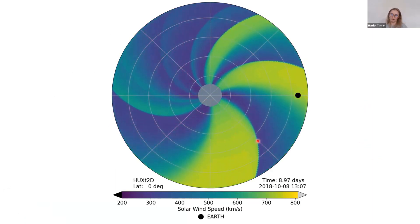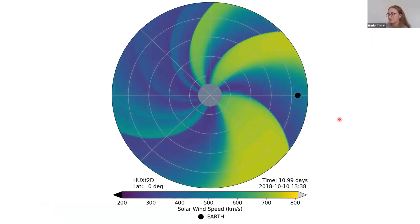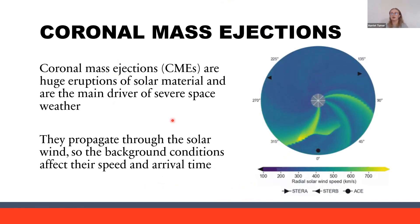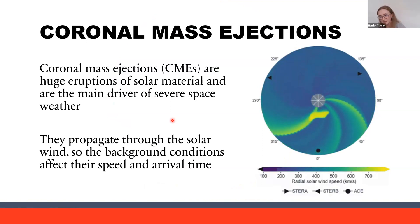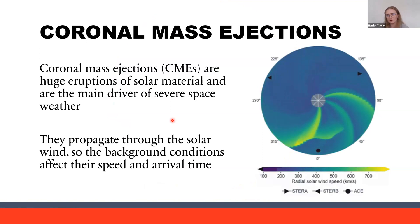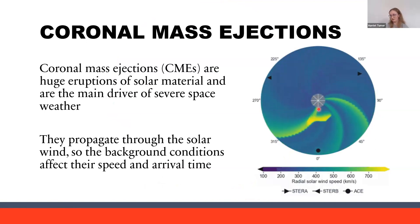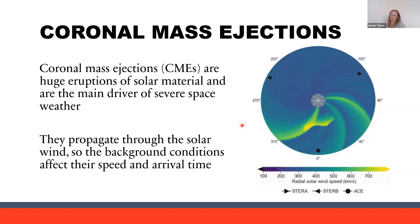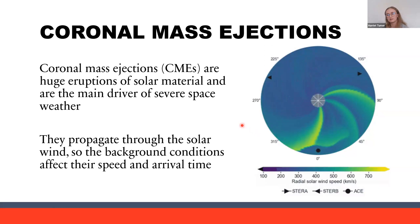With respect to Earth we have a full rotation in approximately 27 days. Coronal mass ejections, or CMEs, are huge eruptions of solar material from the sun and they are the main driver of severe space weather. They propagate through the solar wind, so the background conditions will affect their speed and arrival time. As you can see in this animation, a CME injected into a fast solar wind stream has its front distorted. So the idea is that if we can improve the forecasting of background solar wind conditions, we'll be able to model coronal mass ejections more effectively.